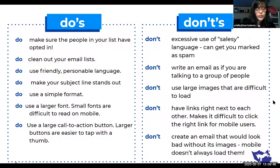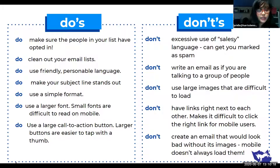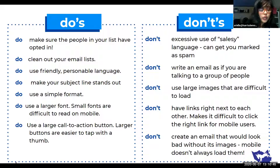These are some do's and don'ts to improve the open rates for emails. Do make sure that people in your list have opted in — you want to make sure people actually want to receive your emails, which you can do via sign-in sheets or just by asking. Do clean out your email lists, because sometimes when people fill out their emails on a sign-up sheet, their handwriting is not so good, so clean out all emails that bounce back. You want to use friendly and personable language, make sure your subject line stands out, and use a simple format — don't use three columns for an email, it's just not good for mobile. Use a larger font and a large call-to-action button, because it's just easier for mobile users to read and navigate.